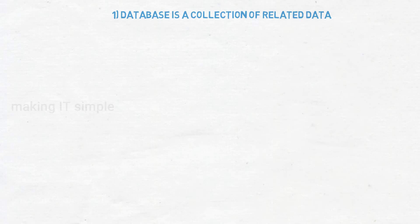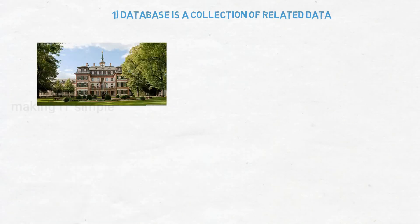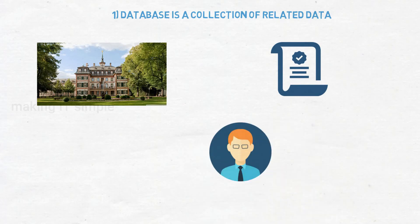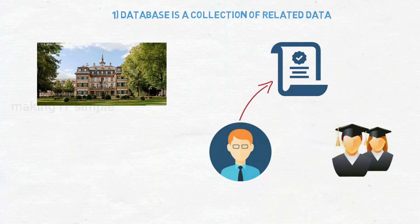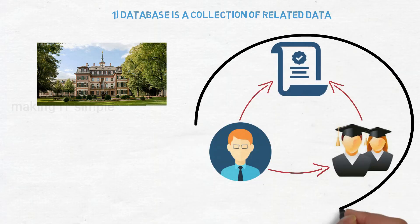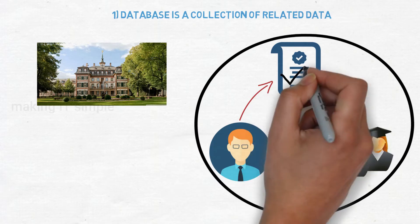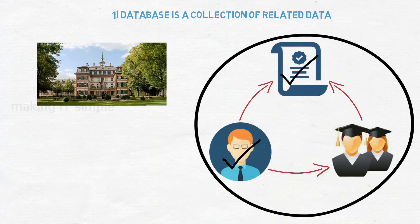So let's simplify the definition. It is a collection of related data. That means if we consider a college, there will be data of courses, teachers, students, etc. which will be related to each other. There will be a particular teacher teaching a particular course to students. There will be students taking different courses. So to make a database of a college we need to collect all the data about courses, teachers, students, etc. which will be interrelated with each other.